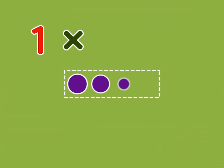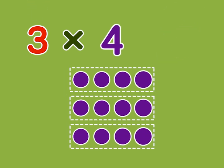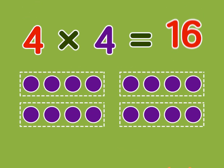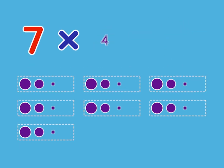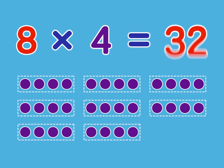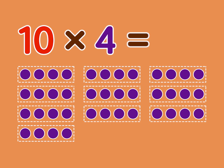1 times 4 is 4. 2 times 4 is 8. 3 times 4 is 12. 4 times 4 is 16. 5 times 4 is 20. 6 times 4 is 24. 7 times 4 is 28. 8 times 4 is 32.